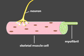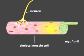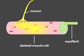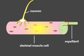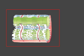When a neuron stimulates a muscle cell, an action potential sweeps over the plasma membrane of the muscle cell. The action potential releases internal stores of calcium that flow through the muscle cell and trigger a contraction.